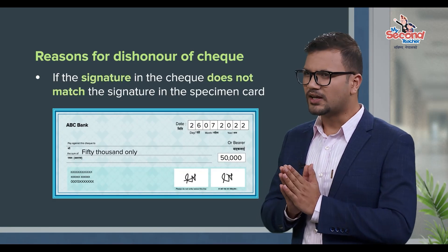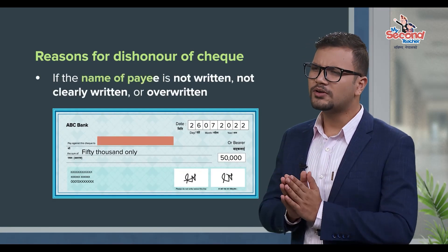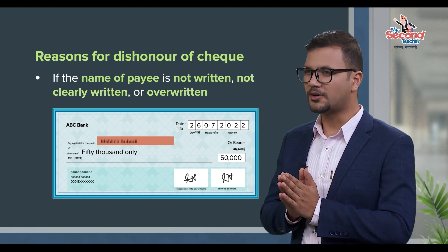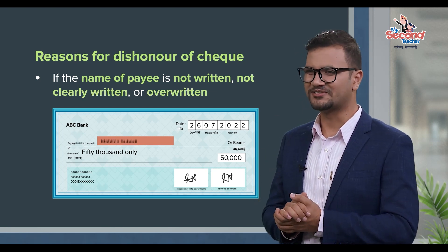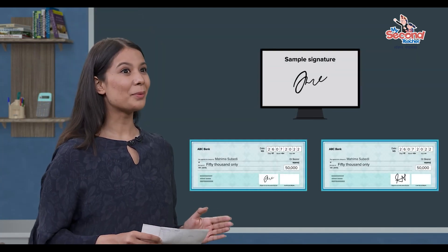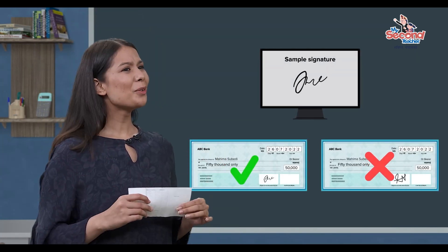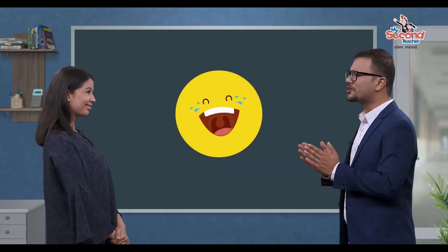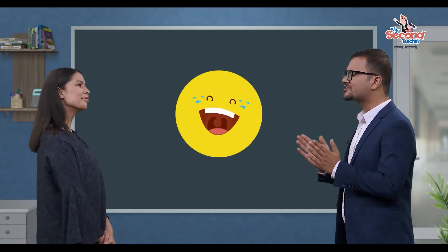Another reason is signature mismatch. If the signature on the check does not match the signature registered with the bank, the check will be dishonored. The bank requires that the signature on the check must match the one on file.